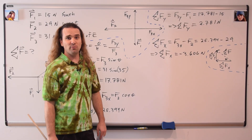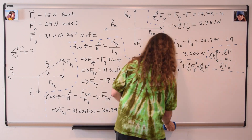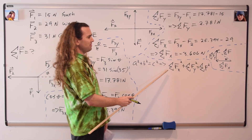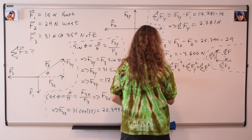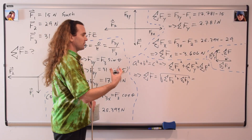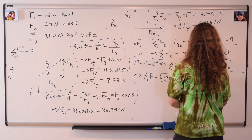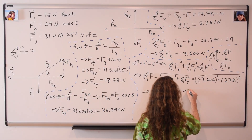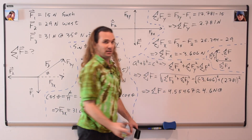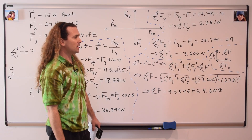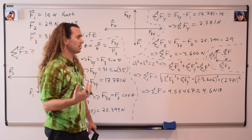So now, in order to find the net force, we use the Pythagorean Theorem. A squared plus b squared equals c squared, therefore the net force in the x direction squared plus the net force in the y direction squared equals the net force squared. Taking the square root gives us the net force equals the square root of the net force in the x direction squared plus the net force in the y direction squared. Plugging in numbers: the square root of negative 3.606 squared plus 2.781 squared — make sure you put the negative inside the parentheses — gives a net force of 4.55457, or with two sig figs, 4.6 newtons.